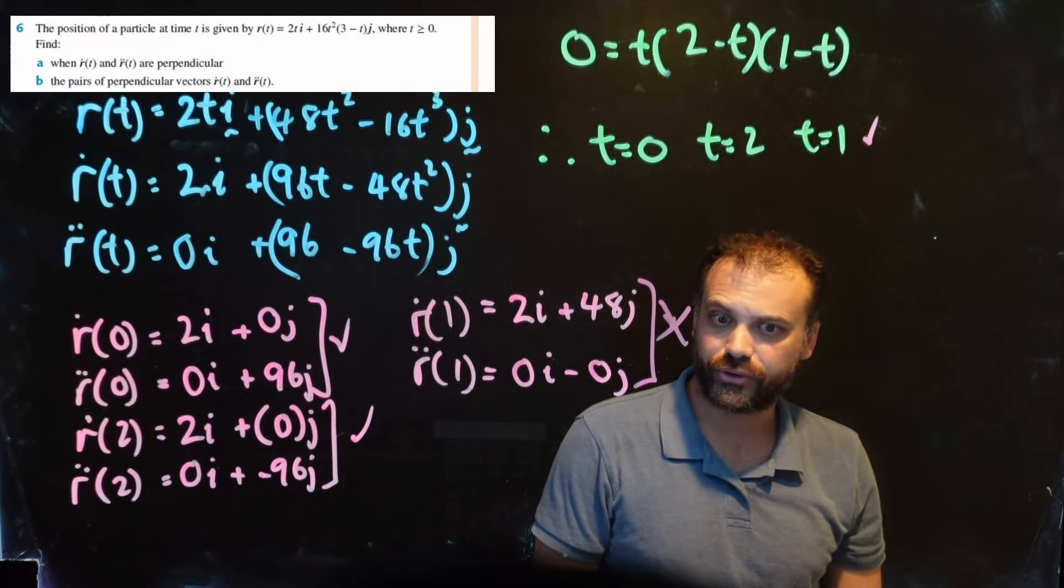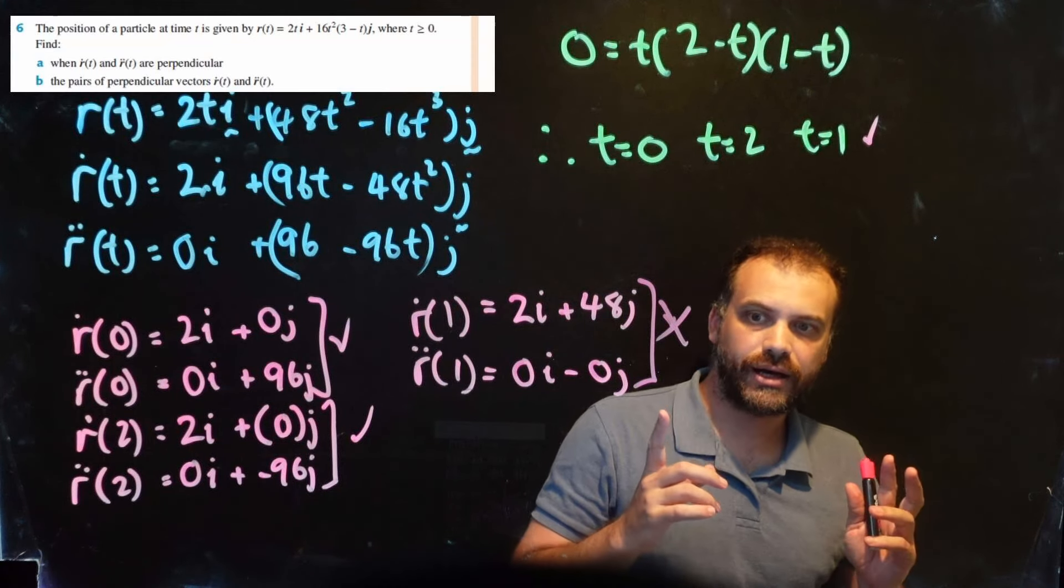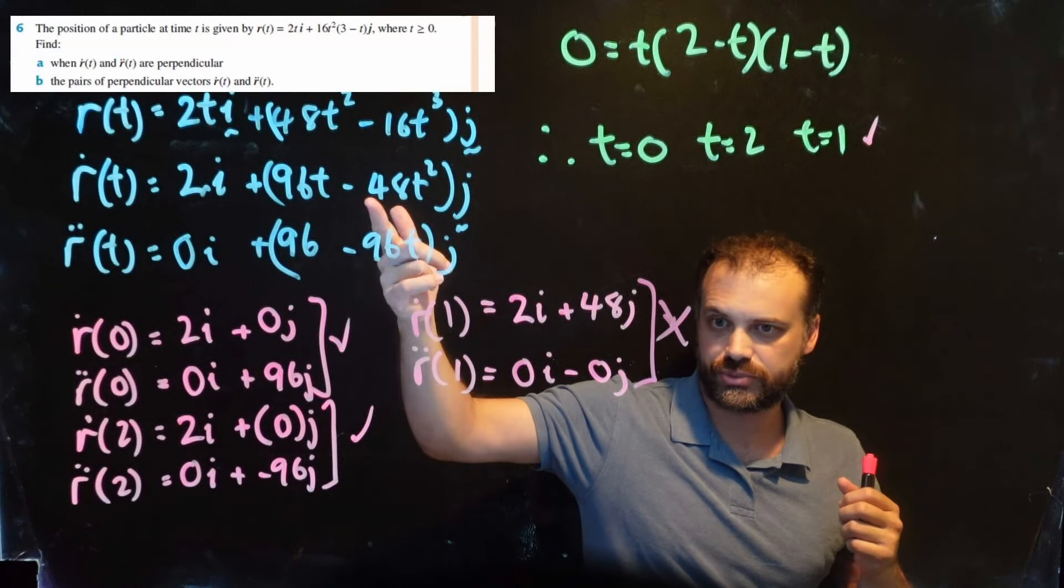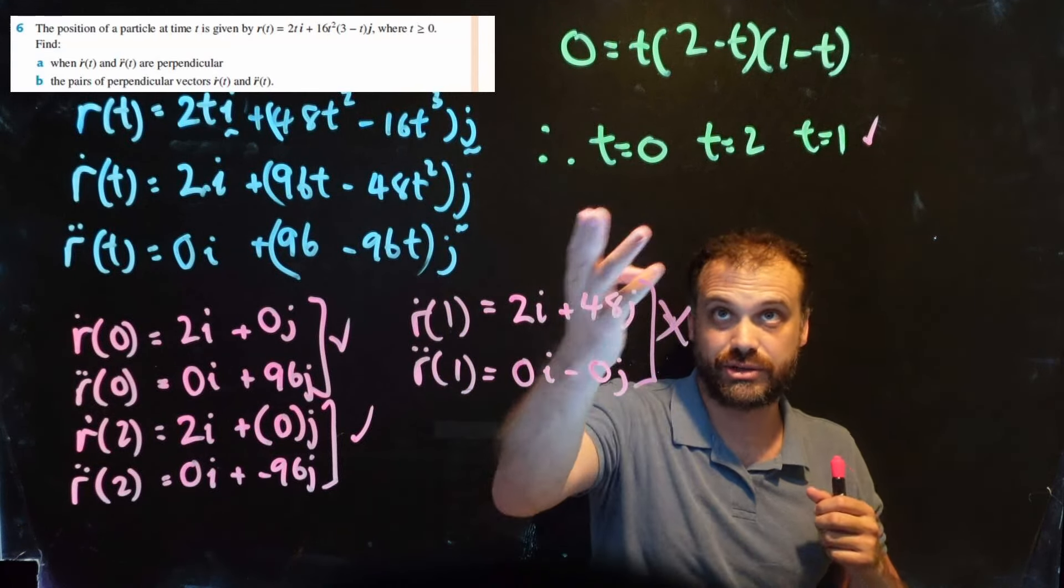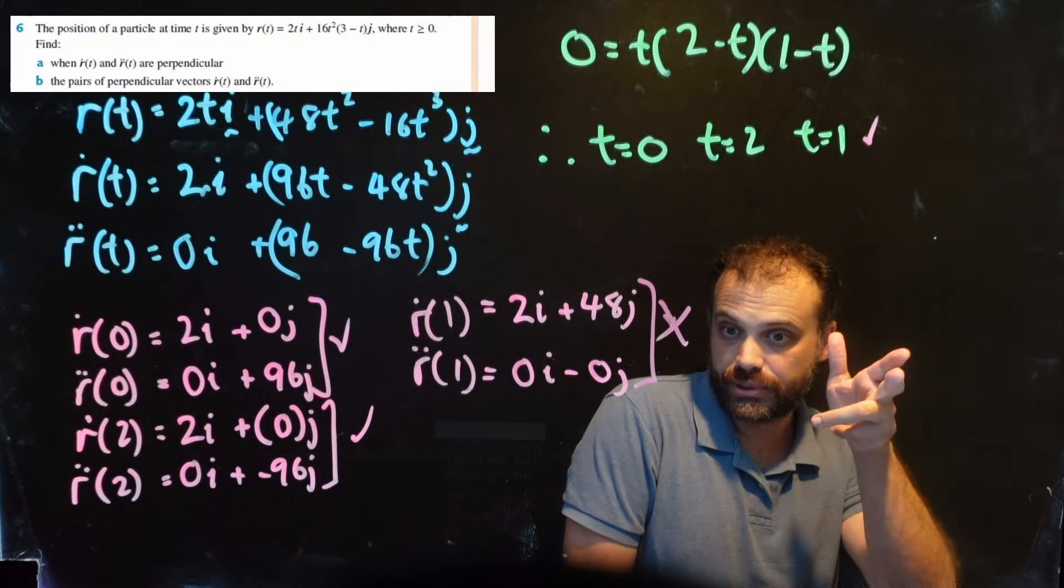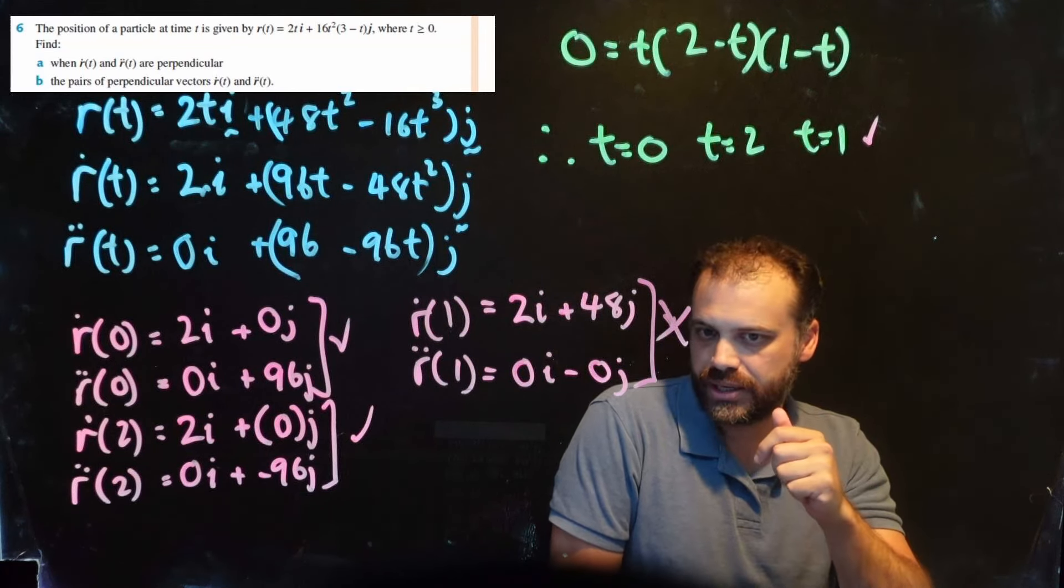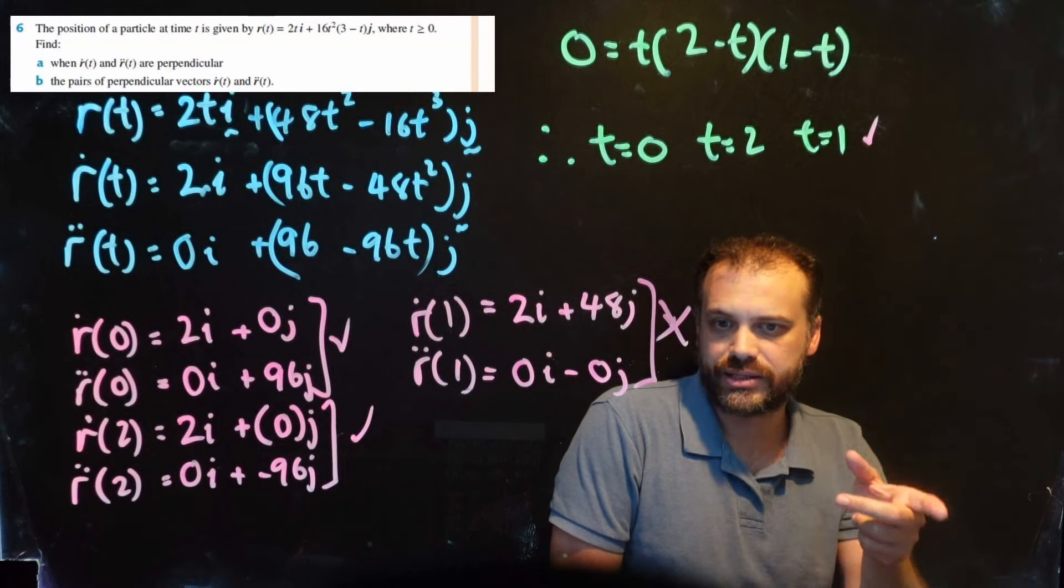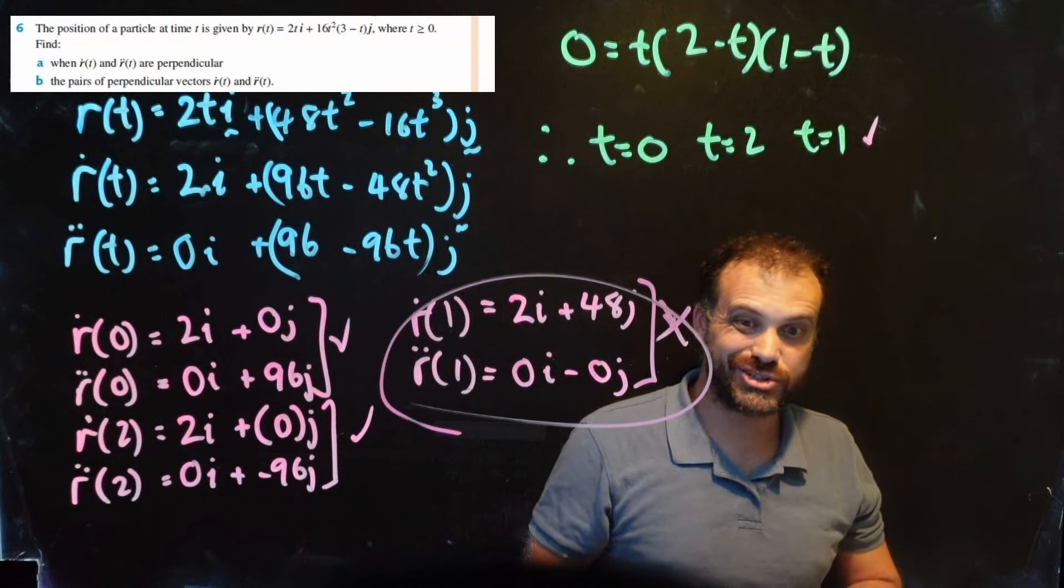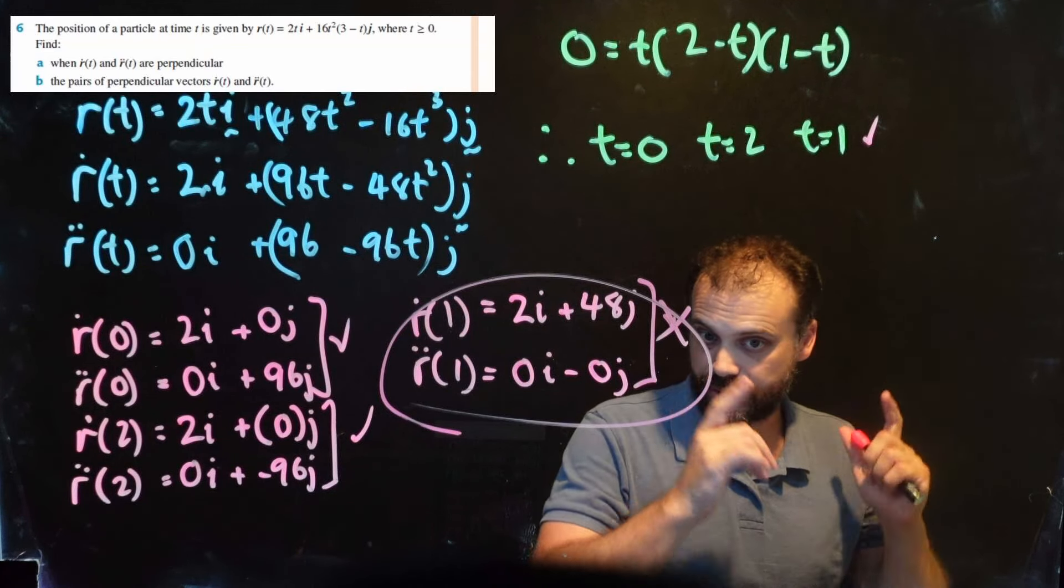This leads us to a nonsensical conclusion. Very odd. So this question's interesting because in part A, it says find the times when they're perpendicular. The textbook gives two answers, 0 and 2, and they don't really give a great explanation for why 1 shouldn't be. It's not until you do part B that it becomes clear that 1 is not an answer for this exact reason here - one of the vectors just doesn't exist at time 1.